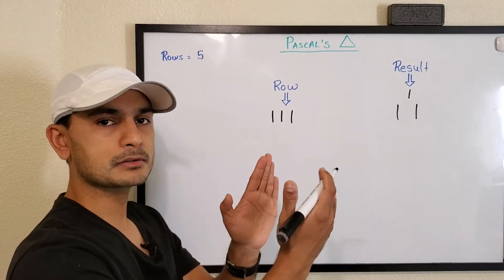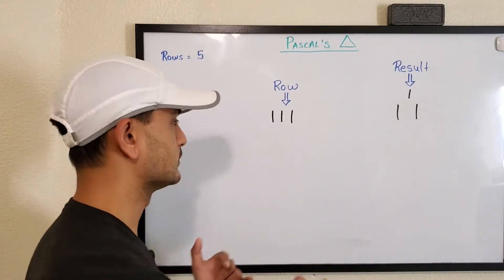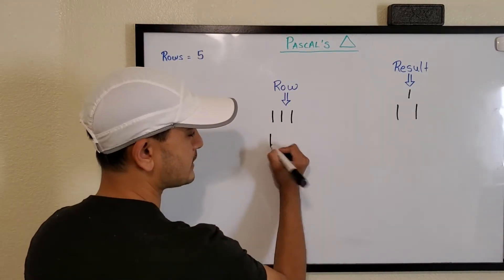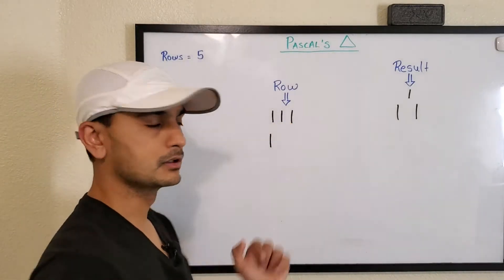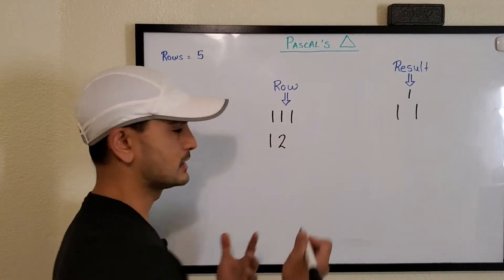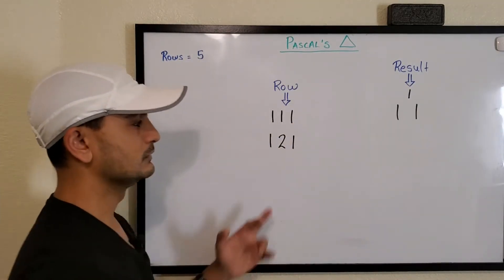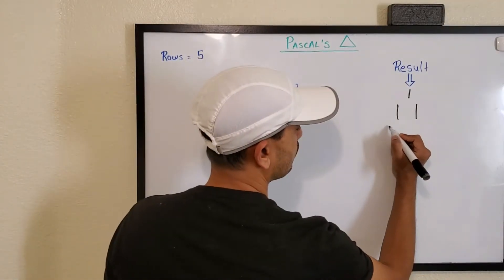And now we iterate or loop over that row and we add the current number and the next number except the first and last. So let's see what that means. We'll take the first number as is, now we'll add this number and next number so one plus one will be two, and we'll take last number as is so one. So that's our next row in Pascal's triangle. We'll add it to result: one two one.